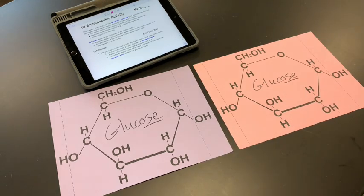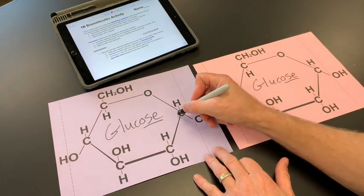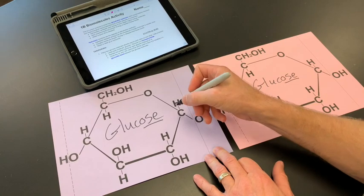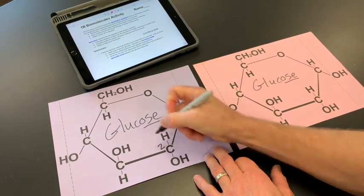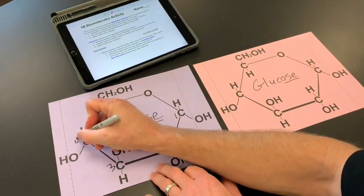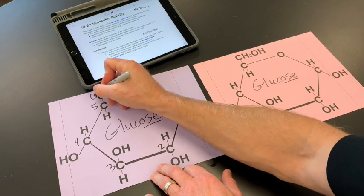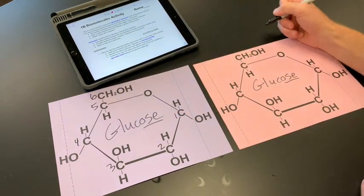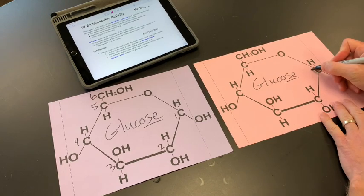Number the carbon atoms for each glucose molecule. So there are six carbon atoms, and they each have an assigned number. So I'm going to start with the one on the right here, and then we go down and up: one, two, three, four, five, six. This is also in your book on page 25. I'll do this one as well.